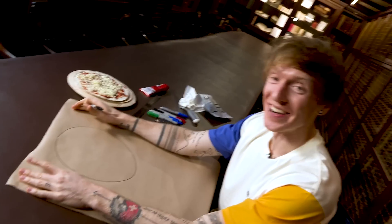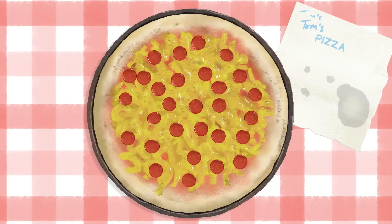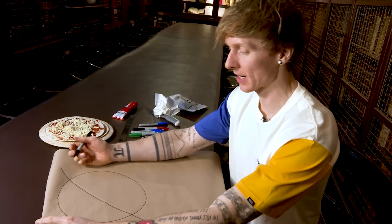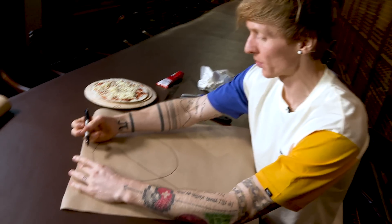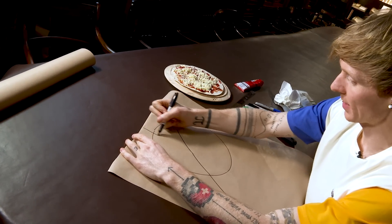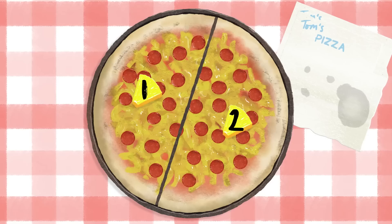Let's start with a diagram and let's imagine I can do one cut. It doesn't really matter what I do — that's going to give me two pieces. Now I'm going to add a second cut, and I'm going to try and do something clever. So now I have one, two, three, four pieces.